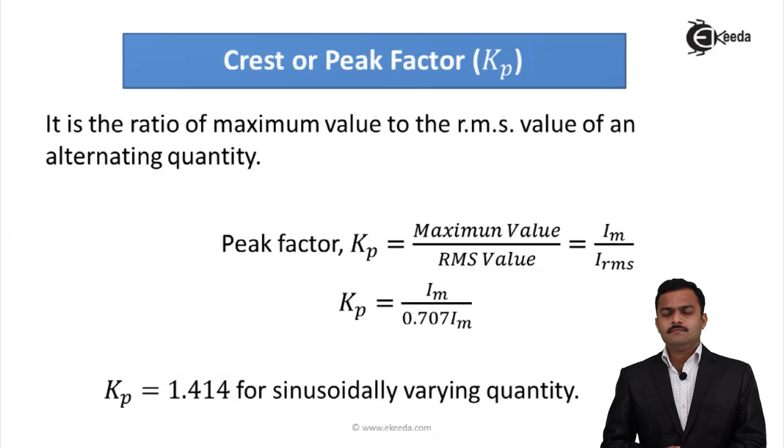Let's define another factor, which is peak factor or crest factor. It is the ratio of maximum value to RMS value. So Kp is given as maximum value divided by RMS value. Maximum value is Im, RMS is denoted as I_RMS.